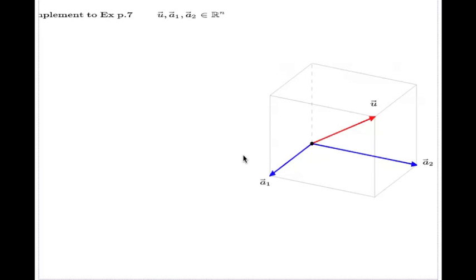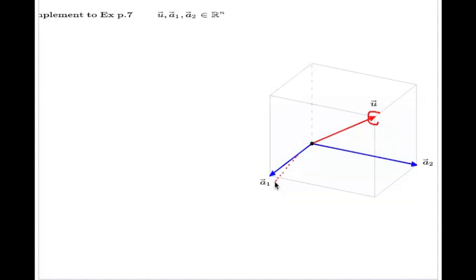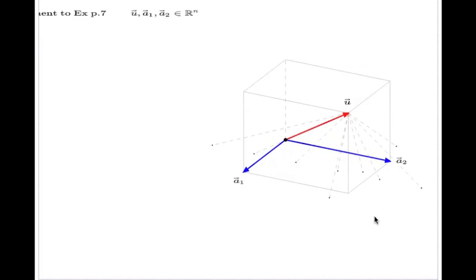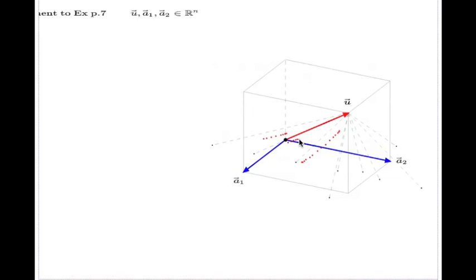So the question I want to ask now is this — like the question we asked before with two vectors, now we have three. How can we find the distance from the tip of this vector down to the span of these two? We know the span of these two will be a plane. This time it is a plane rather than a line. I can drop a few dashed lines down to this plane.